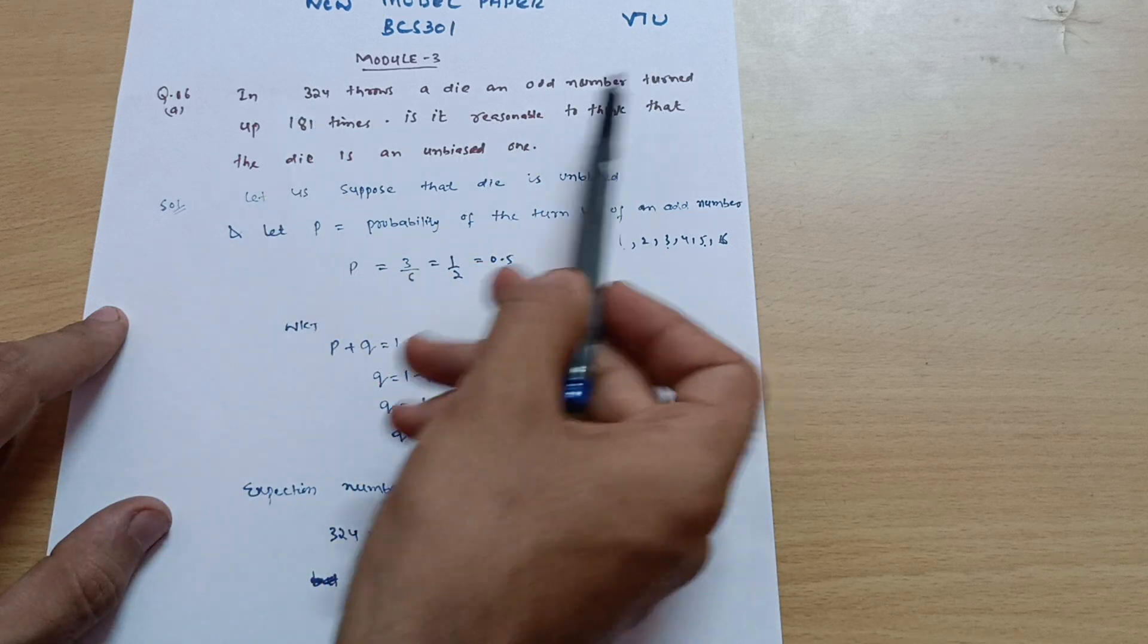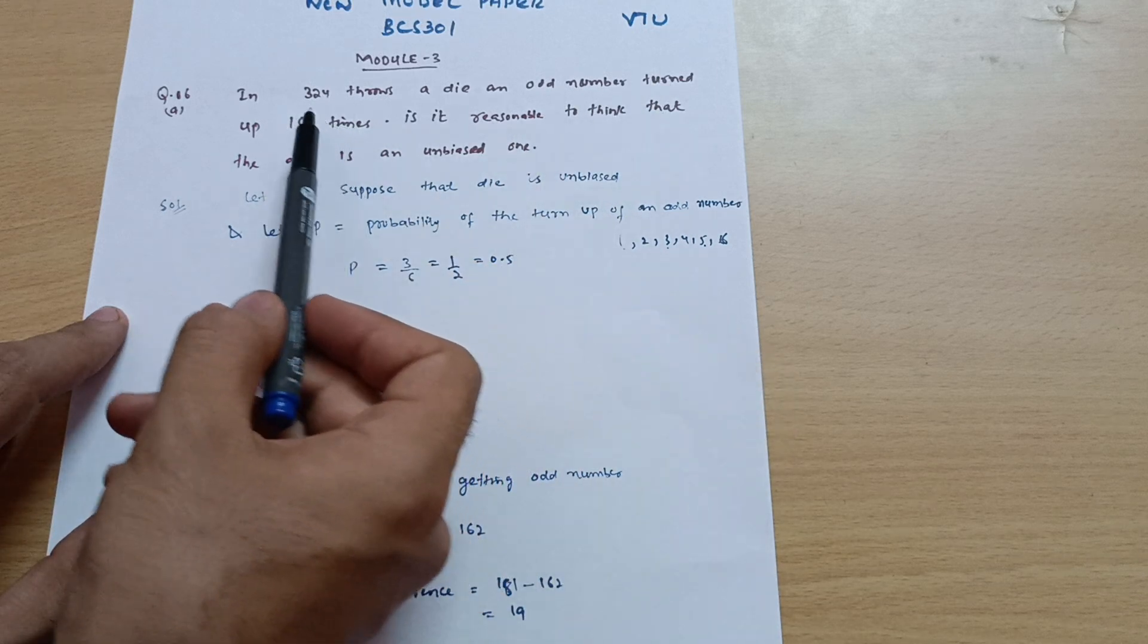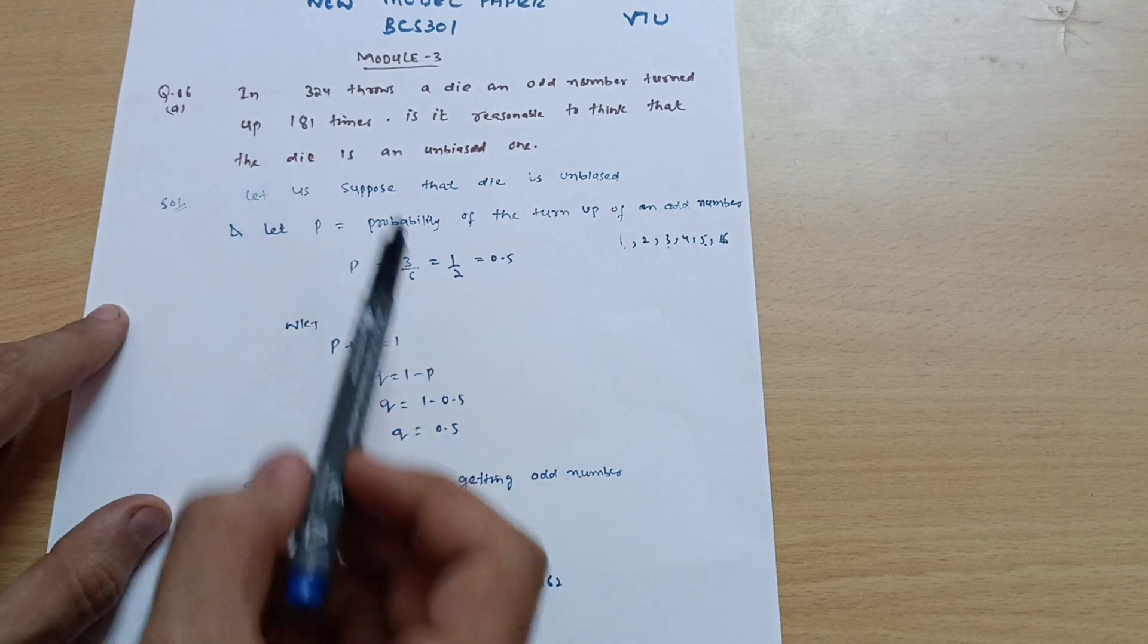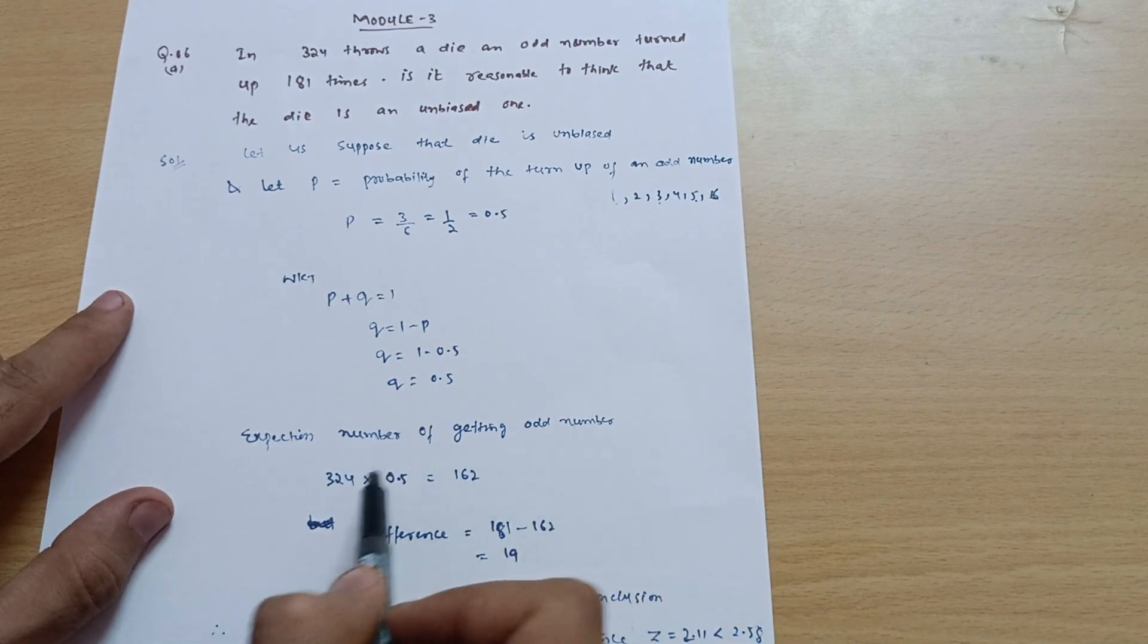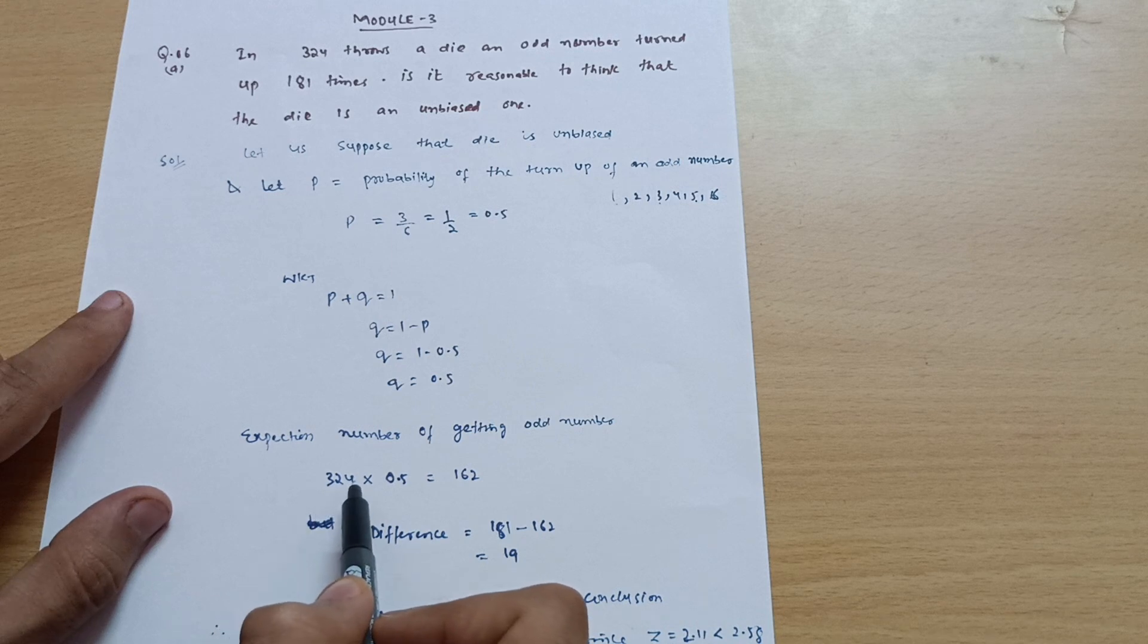In the question it is mentioned that odd number is turning 181 times if you are throwing the die 324 times. So you will get expected number of getting odd number: 324 is the time the die is thrown multiplied by its probability, that is 0.5.